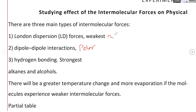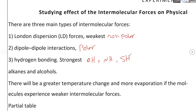London dispersion is for non-polar compounds. Hydrogen bonding occurs in compounds that have OH, NH, or SH as part of their molecule. If a molecule has an OH, NH, or SH bond, it has hydrogen bonding as its intermolecular force, and for molecular compounds this is the strongest type.